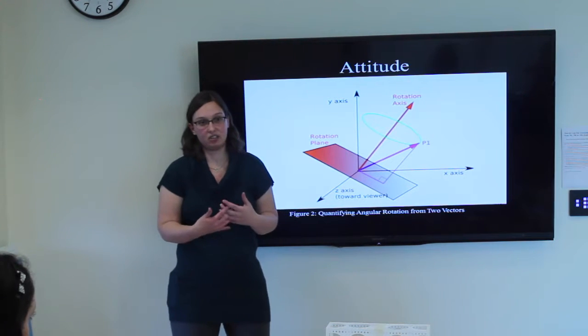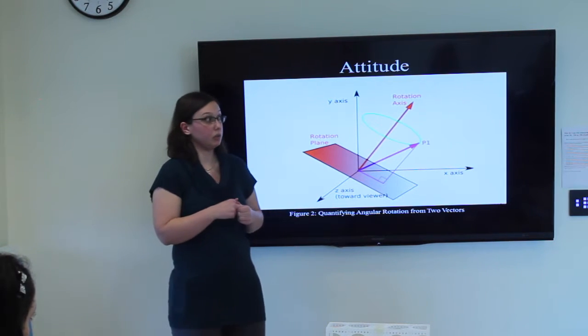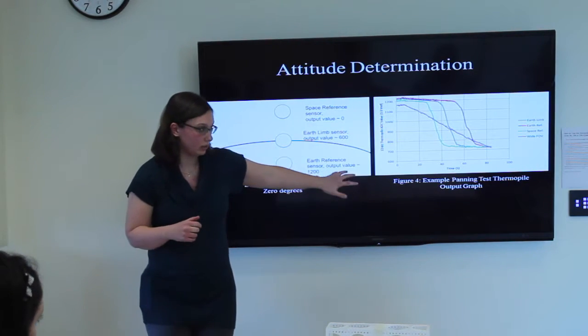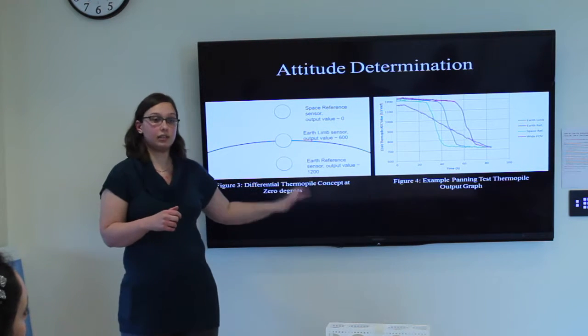Now, I keep on bringing up sensors, but let's do some examples of what typical sensors are found on CubeSats. This next one has images on the Earth-Horizon sensors.